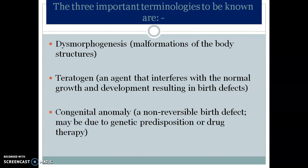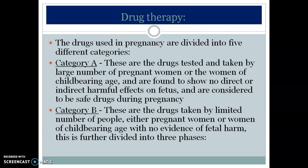Important terminology includes dysmorphogenesis, which refers to malformations of the body's structures. Teratogens are agents that interfere with normal growth and development, resulting in birth defects. Congenital anomaly is a non-reversible birth defect that may be due to genetic predisposition or drug therapy. Because of these risks, careful monitoring is essential and most drugs are contraindicated in pregnancy as they can cross the placental barrier and produce unwanted birth defects.